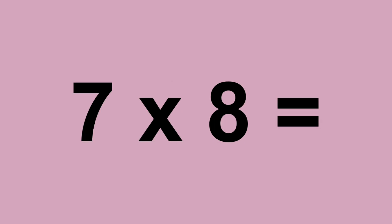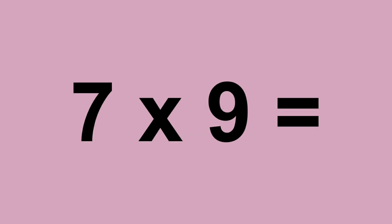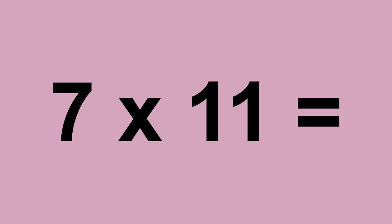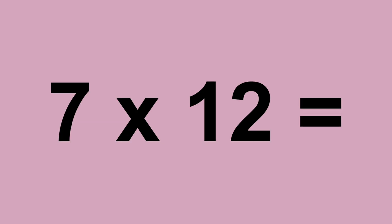Seven times eight equals fifty-six. Seven times nine equals sixty-three. Seven times ten equals seventy. Seven times eleven equals seventy-seven. Seven times twelve equals eighty-four.